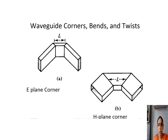At low frequencies the bends need to be very long, so we can use corners instead of bends. Depending on the application, if we need to change direction suddenly and making the bend very long is impractical, corners can be used. We can use an E-plane corner or an H-plane corner.